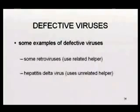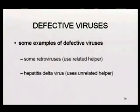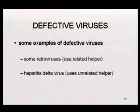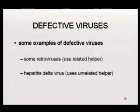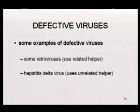Examples of defective viruses include retroviruses which have picked up host cell genes and lost their own genes, using a related helper virus which provides the missing functions. Hepatitis delta virus is another example — it's a defective virus that uses an unrelated helper virus, hepatitis B virus, to provide the envelope for packaging. So it's a parasite on an unrelated virus, whereas some retroviruses are parasites on related viruses.